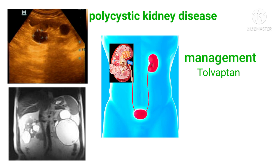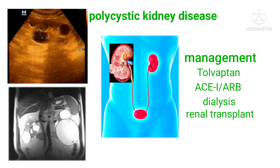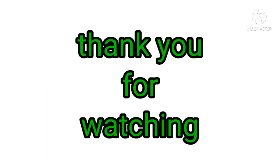ACE inhibitors and ARBs are used to control blood pressure. Dialysis and renal transplant are ultimately needed for advanced disease. Thank you for watching.